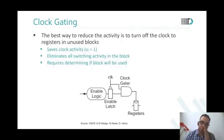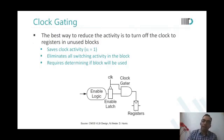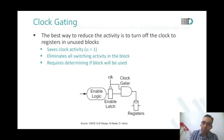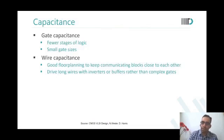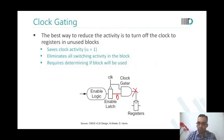To reduce activity factor, you add enable logic such that when the enable is 0 the output will not toggle. If the output doesn't toggle you save power. This is clock gating — done specifically to reduce activity factor and save power.